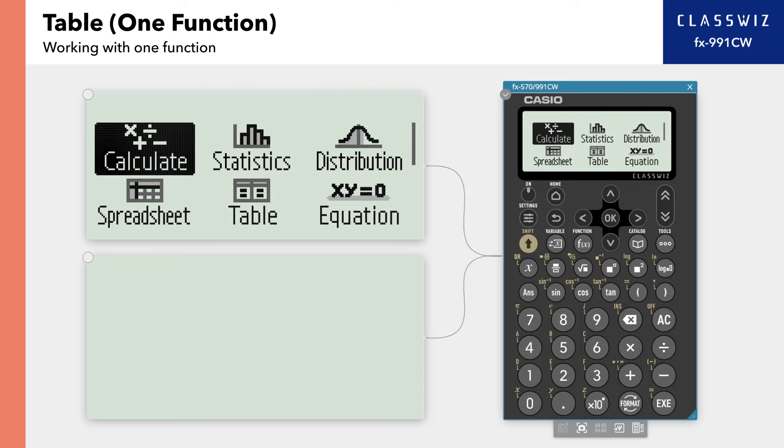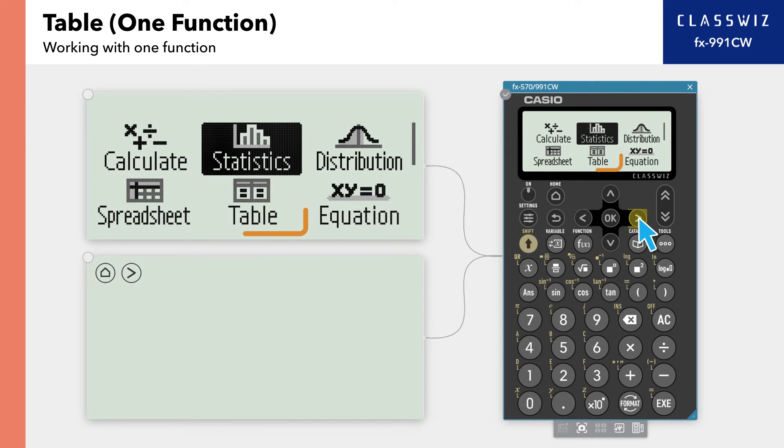Let's use Table to display one function. First, press Home, then select Table.